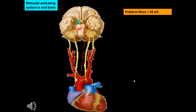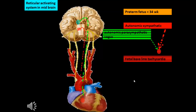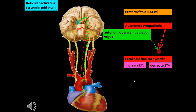In the preterm fetus less than 34 weeks, the autonomic sympathetic nervous system is well developed, while the autonomic parasympathetic vagus is less developed. As a result, fetal baseline tachycardia with increased long-term variability and decreased short-term variability is the characteristic feature of the fetal heart rate in the preterm baby.